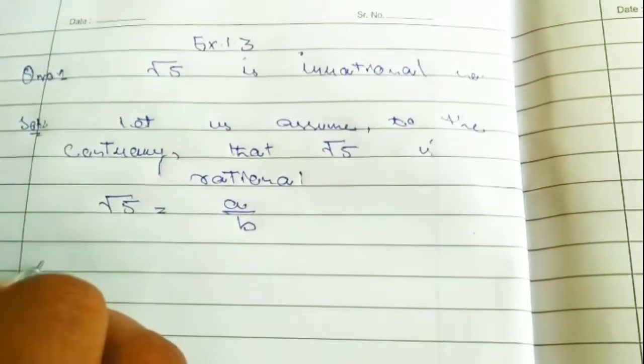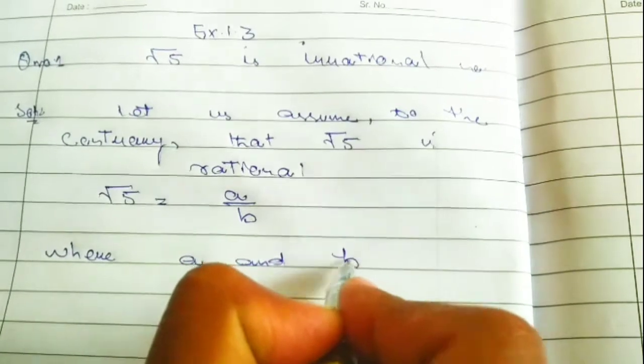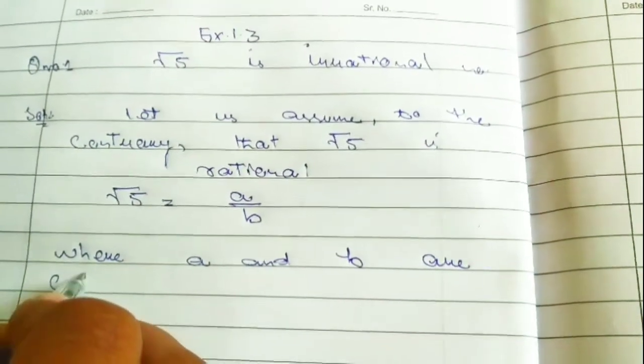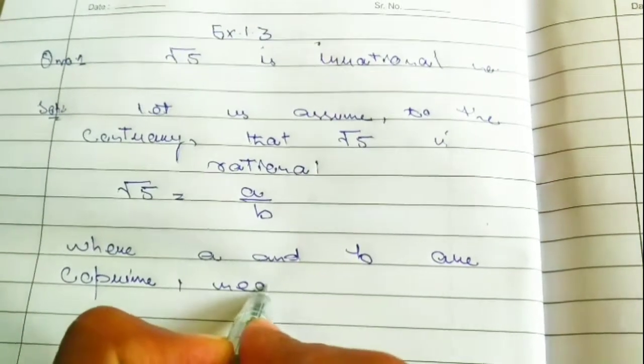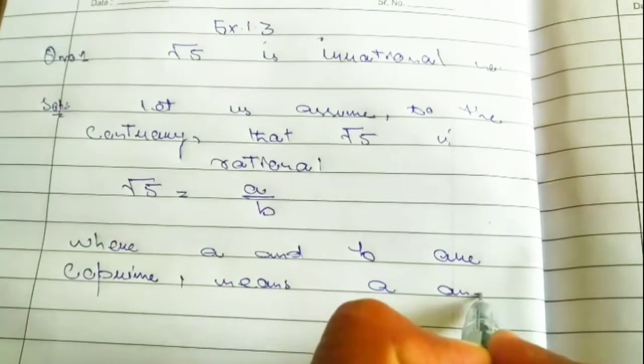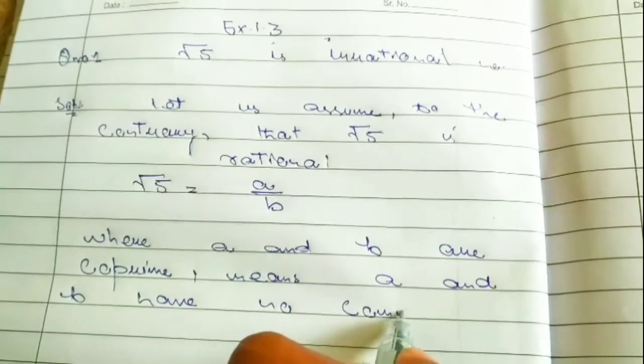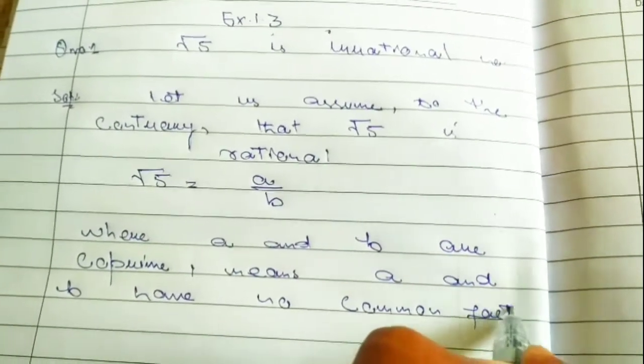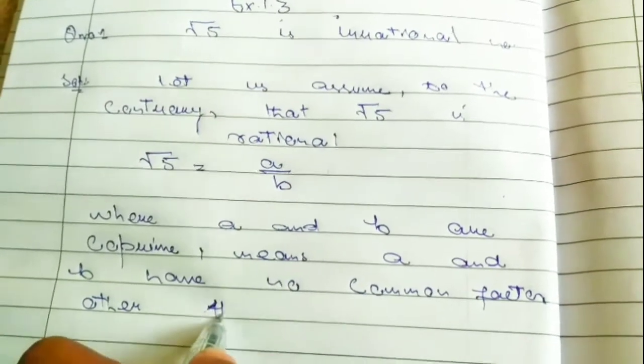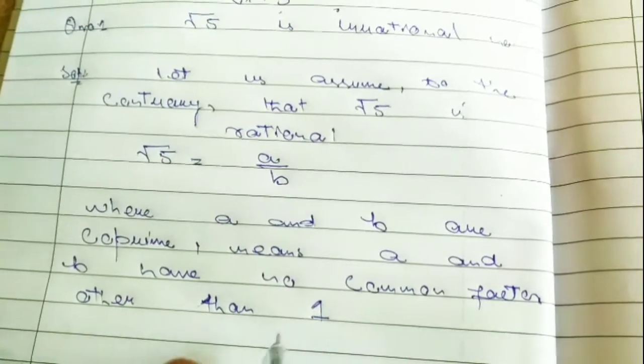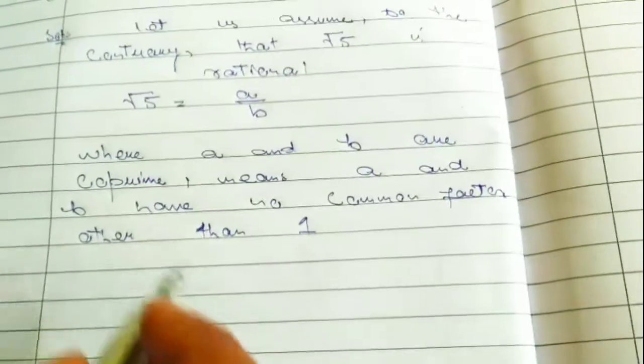A upon B where A and B are co-prime. A and B are co-prime means A and B have no common factor other than one. So A and B have no common factor except one. We have under root of 5 equal to A upon B.